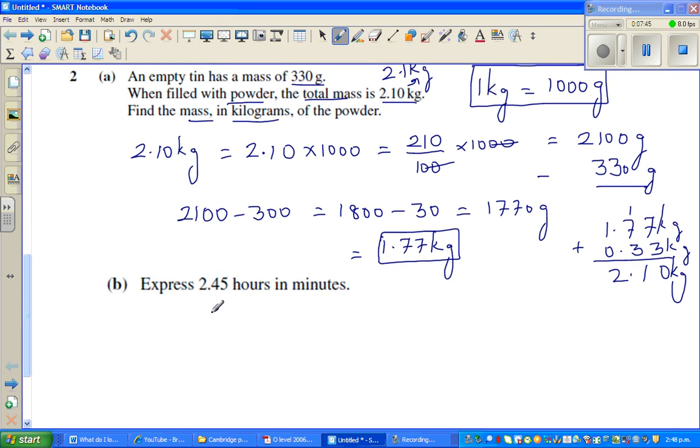I'll finish with this question. 2.45 hour in minutes. Now this is where most of you can go wrong. You know 2 hour, 1 hour is 60 minutes. So 2 hour would be 60 times 2 is 120 minutes. Now you've got 0.45 hour. You have to multiply by 60, not 100. So this is 0.45 times 60 minutes.